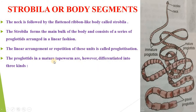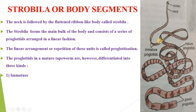The proglottids in a mature tapeworm are differentiated into three kinds. First is the immature proglottid, just behind the neck. Here you can see the scolex part and the neck part, and just behind the neck these are the immature proglottids. They are devoid of reproductive organs and are broader than long. Their number ranges approximately 200.